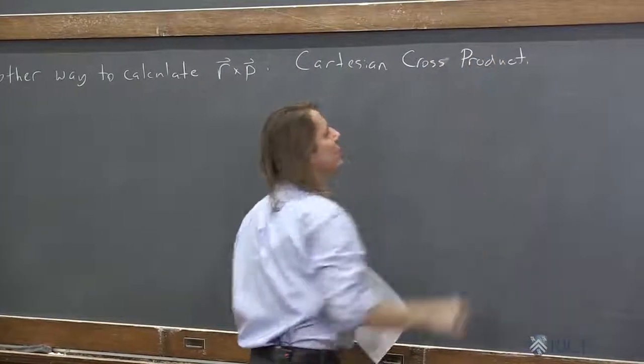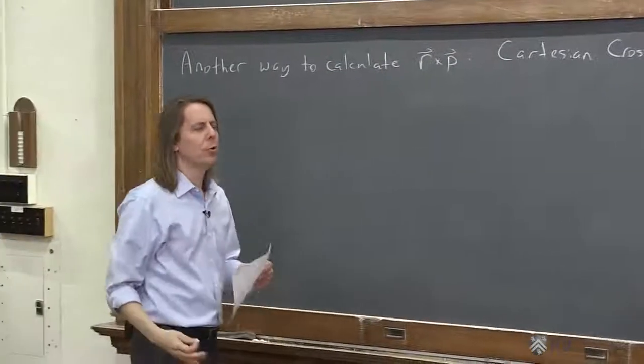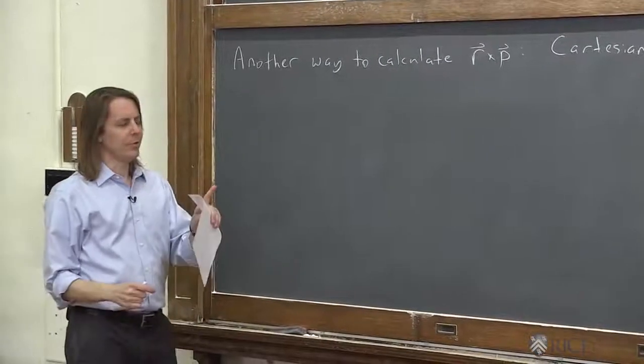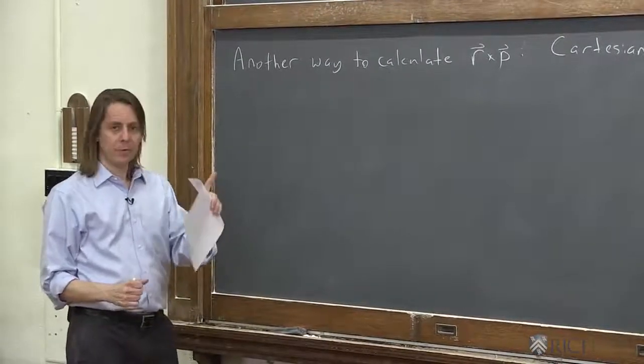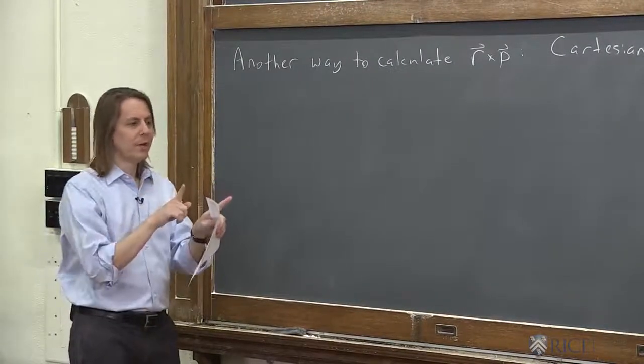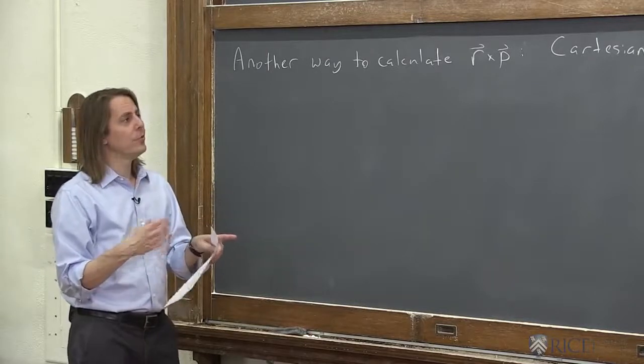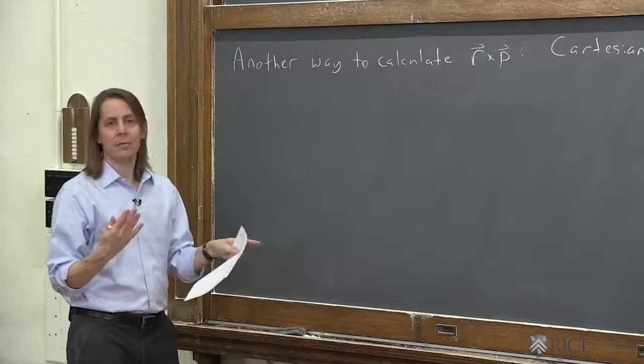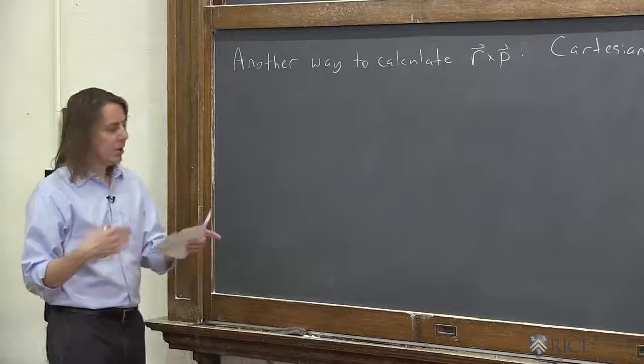So you may have noticed the way we did our cross product was sort of the polar coordinates way. The magnitude of one vector times the magnitude of the other vector times the angle between them. But you can also do it with i hat j hat k hat with the Cartesian unit vector components.